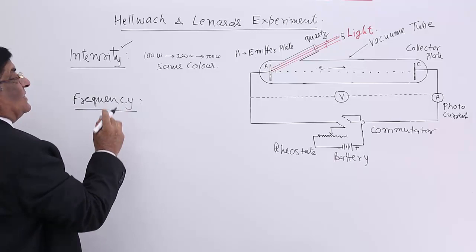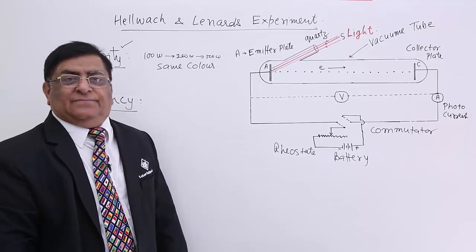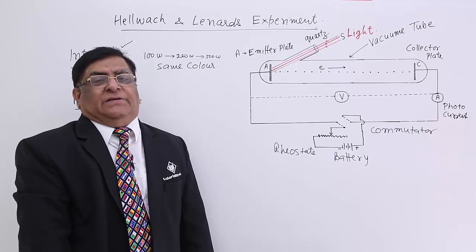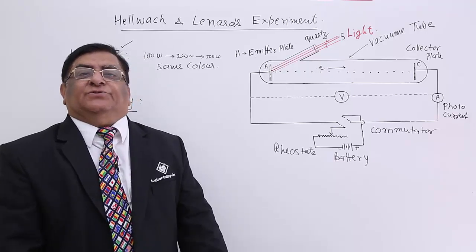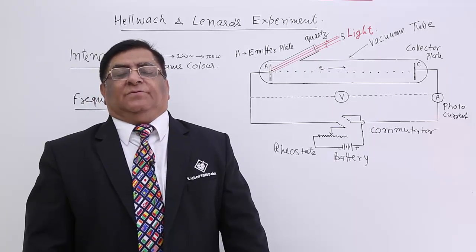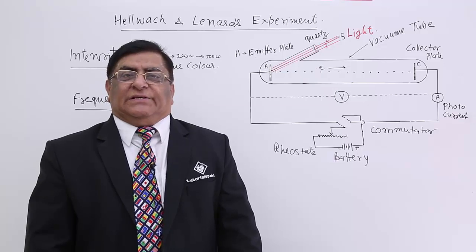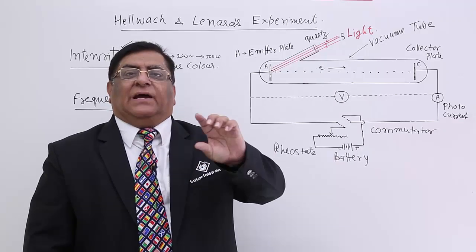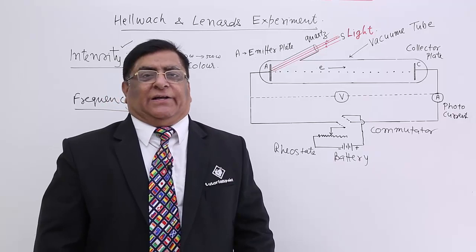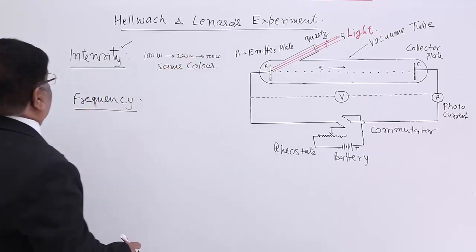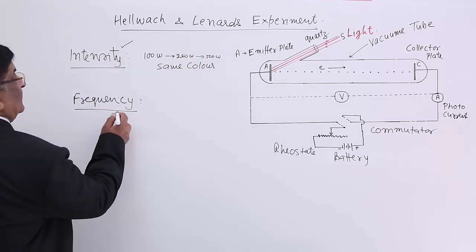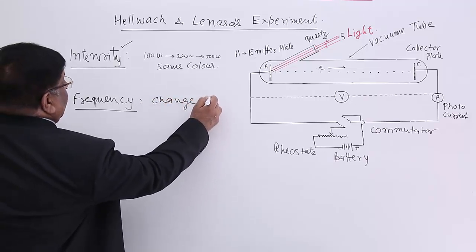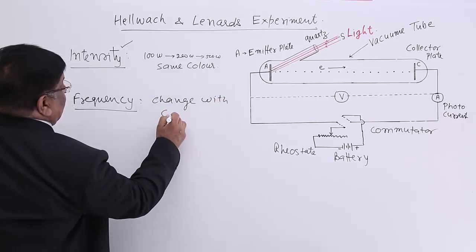How can I change the frequency of this light? For changing frequency, I should change the color of the light, because different frequencies give a different effect and that effect is known as color. So when I want to change frequency, I change the color.